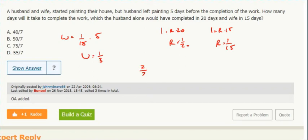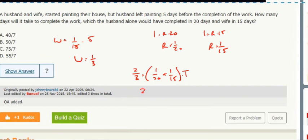So that means together they must have done two-thirds, the other two-thirds, because she finished it. That's their added rates times some time. Solve for T.